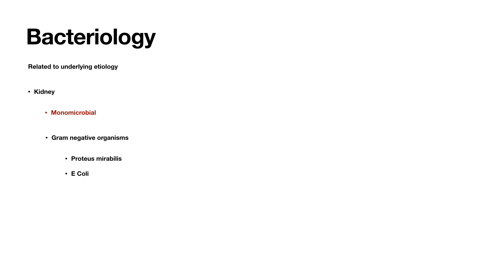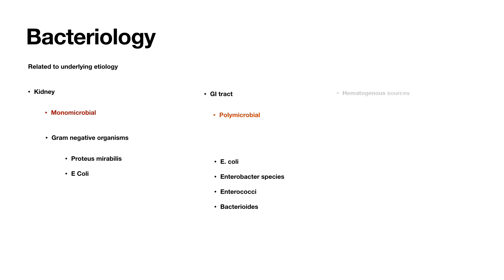Bacteriology of retroperitoneal abscess is related to the underlying etiology. If the infection source is the kidney, the abscess is usually monomicrobial and consists mostly of gram-negative organisms like Proteus mirabilis and E. coli. If the GI tract is the source, the abscess is polymicrobial, consisting of bacteria like E. coli, Enterobacter species, Enterococci, and anaerobes like Bacteroides species. Primary retroperitoneal abscess from hematogenous sources is also monomicrobial and mostly consists of staphylococcal species.